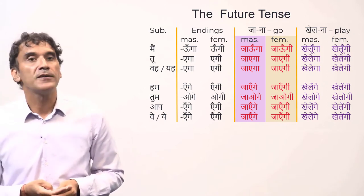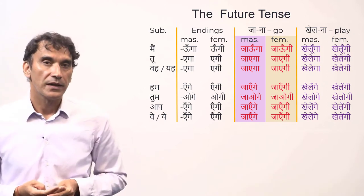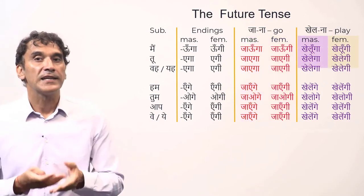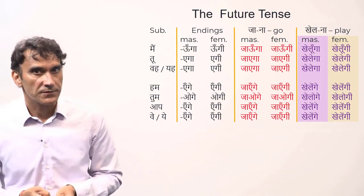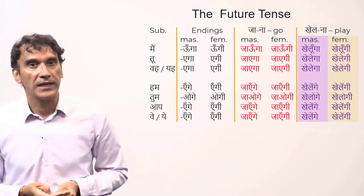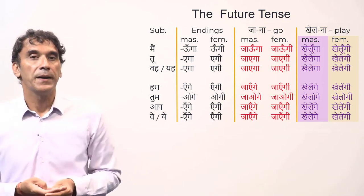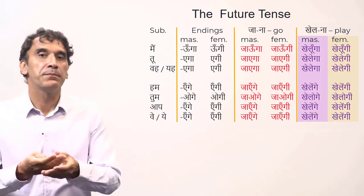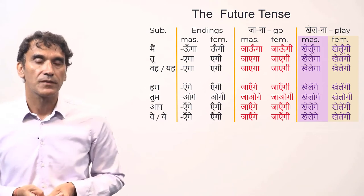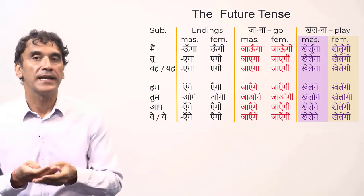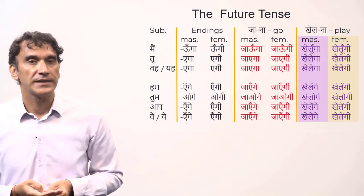The verb 'jana' has a vowel-ending root. The last two columns have future tense forms of the verb 'khelna' (to play), both in masculine and feminine forms. The verb 'khelna' has a consonant-ending root.